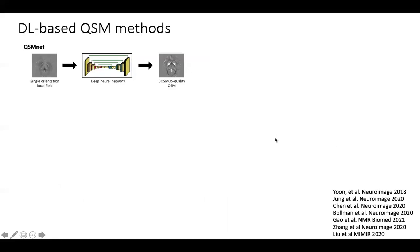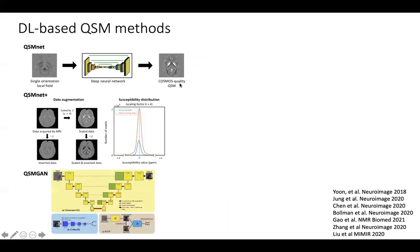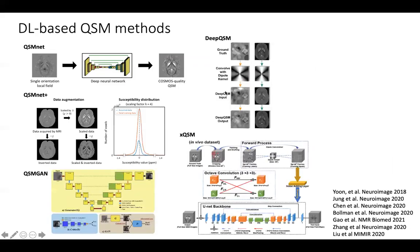In recent years, there are many deep learning-based QSM methods proposed. These methods usually use the Cosmos map as a training label, or use synthetic data for network training, or use novel network architectures.